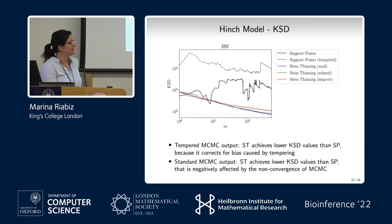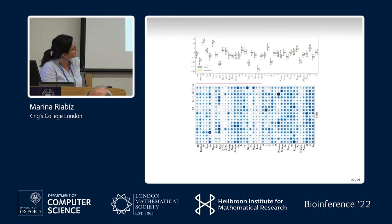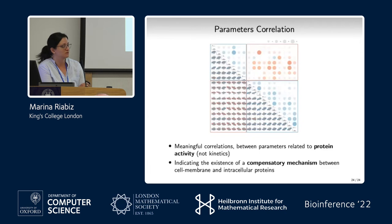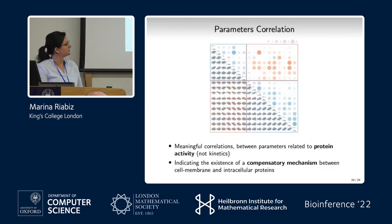We iterated this method for all the cells. The pale regions show contractions of the posterior with respect to the prior — ratios of standard deviations — allowing us to understand which parameters for which cells were identified. We also approximated parameter covariances. We tried to run a hierarchical model, but it's very ill-posed with such a high-dimensional parameter space. We were able to identify blocks of parameters, and the finding is that parameters on the cell membrane and parameters inside the cells were correlated, suggesting a compensatory mechanism between those.